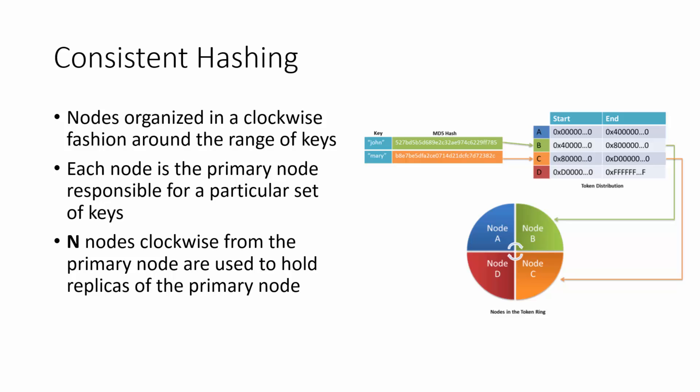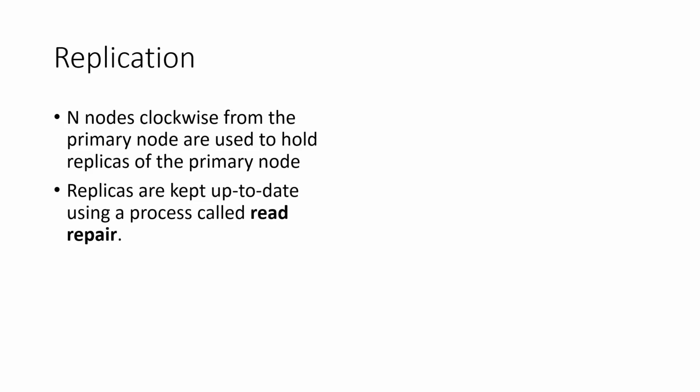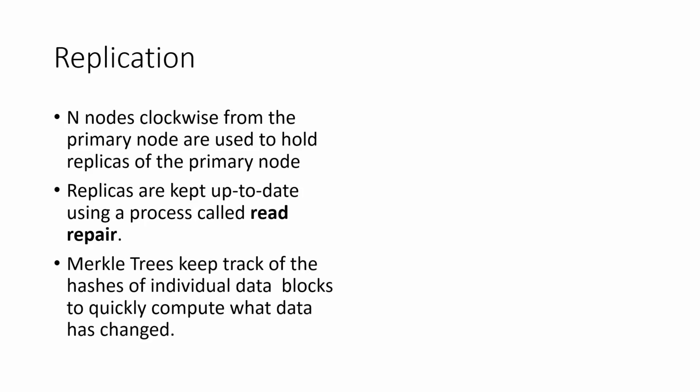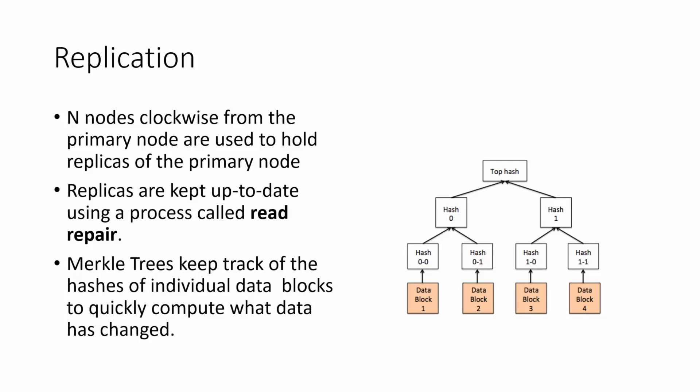If there is replication in the cluster and the replication factor is N, then N nodes clockwise from the primary node are used to hold the replicas of that primary node. Replicas can be kept up to date using a process called read repair if they ever diverge. The process is handled by the concept of Merkle trees. Merkle trees have an interesting property where the hashes at each level of the tree correspond to the hashes of the children, so it can be quickly computed which part of a tree has changed by simply looking at the hash values.